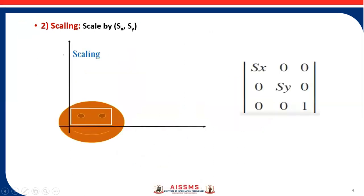This is the translation matrix used for the translation step. Next is scaling. Once the translation is done, we scale the object with Sx and Sy using the scaling matrix: [Sx, 0, 0 / 0, Sy, 0 / 0, 0, 1]. Sx and Sy are the scaling factors.